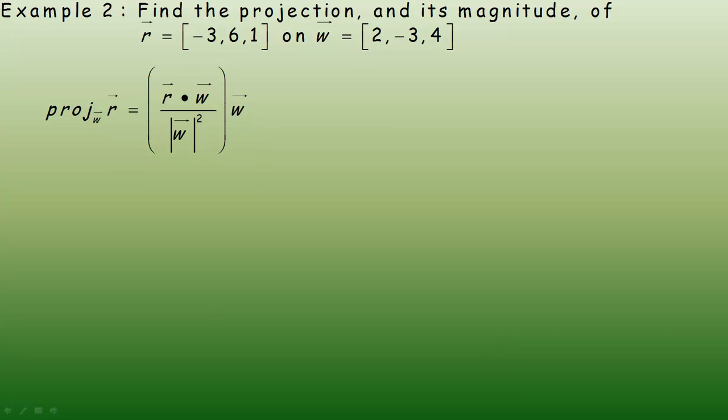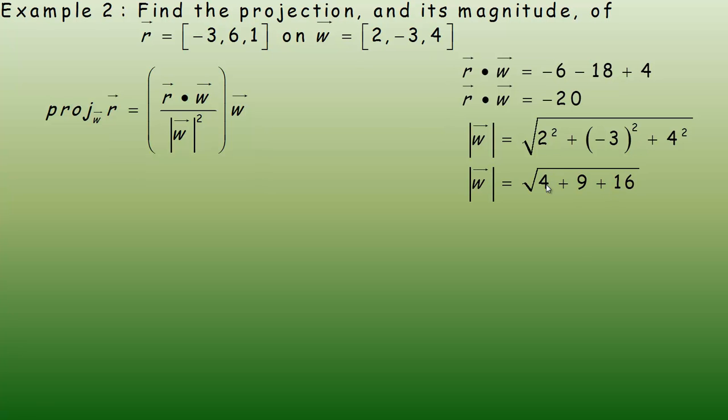In example number 2, let's find the projection and its magnitude of the vector r on the vector w. This is the projection formula here. In the numerator we calculate r dot w, the dot product. Negative 3 times 2 is negative 6, plus 6 times negative 3 minus 18, and 1 times 4 is 4. That's negative 24 plus 4, which is negative 20. We also need to calculate the length of the w vector. So 2 squared is 4, negative 3 squared is 9, and 4 squared is 16. So the length of the w vector is the square root of 29.